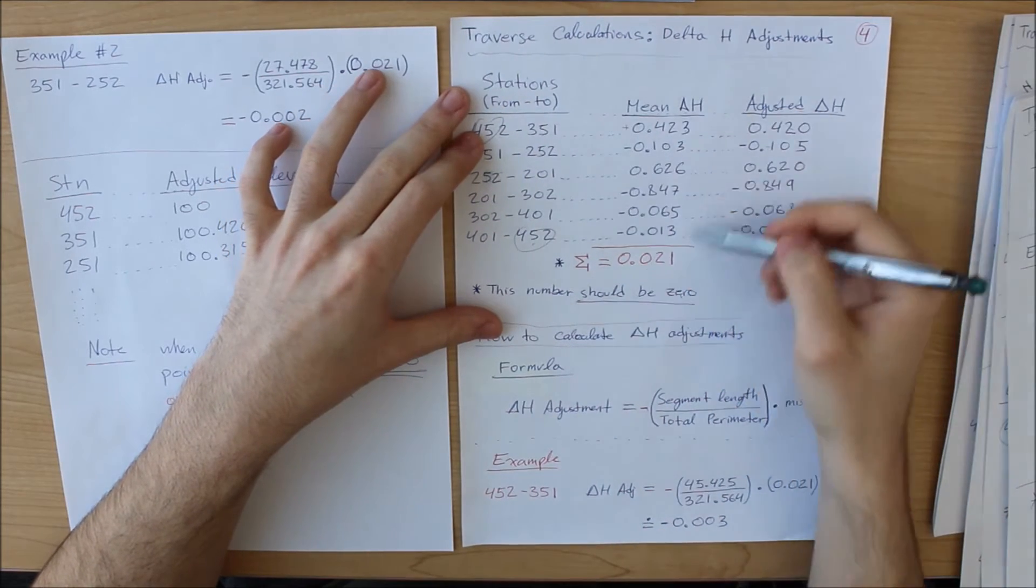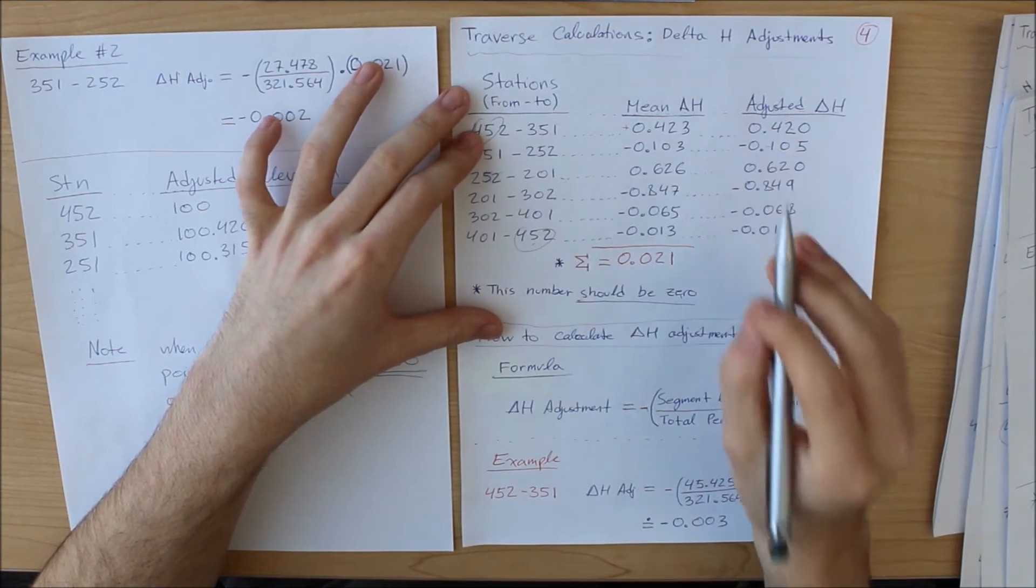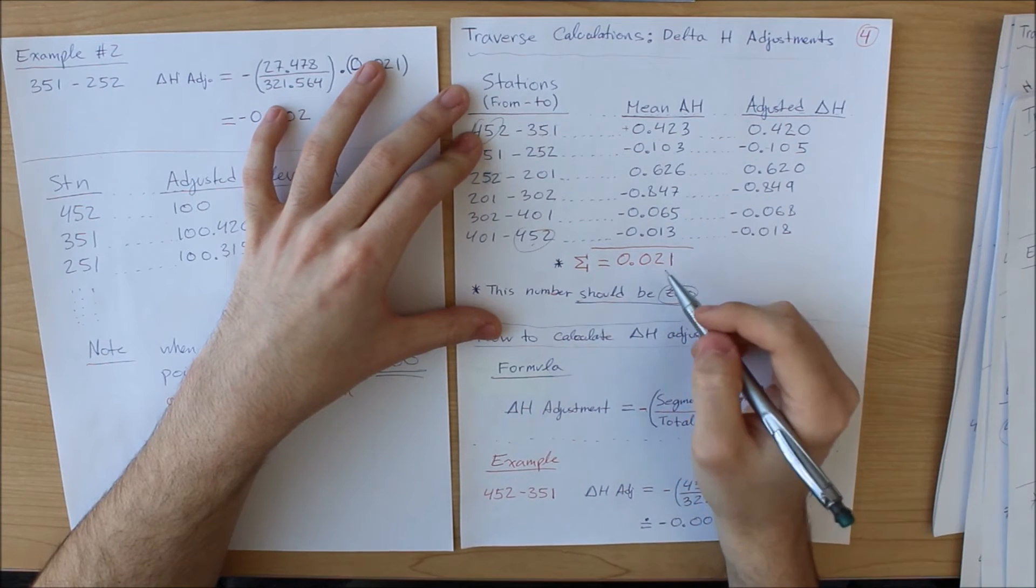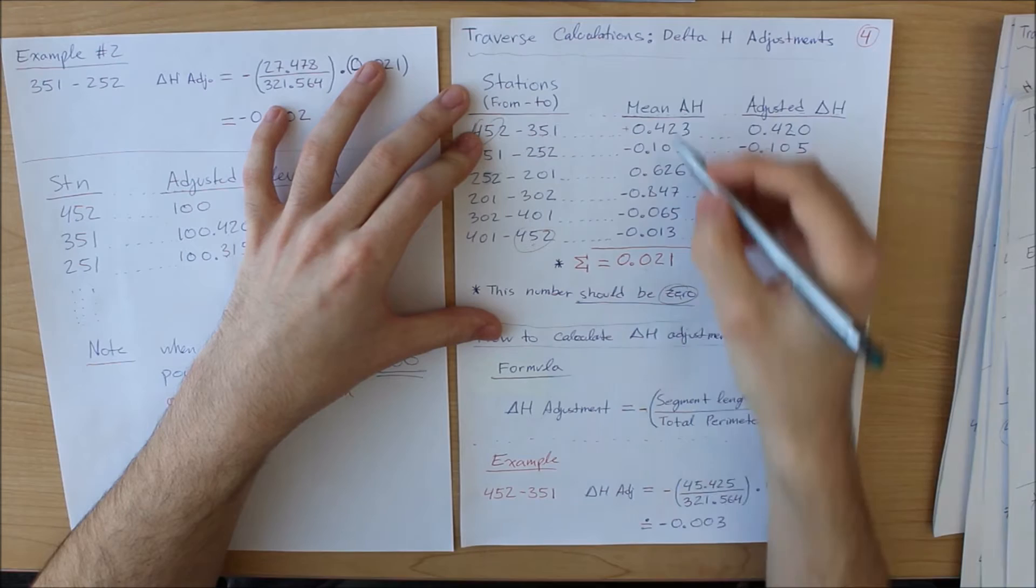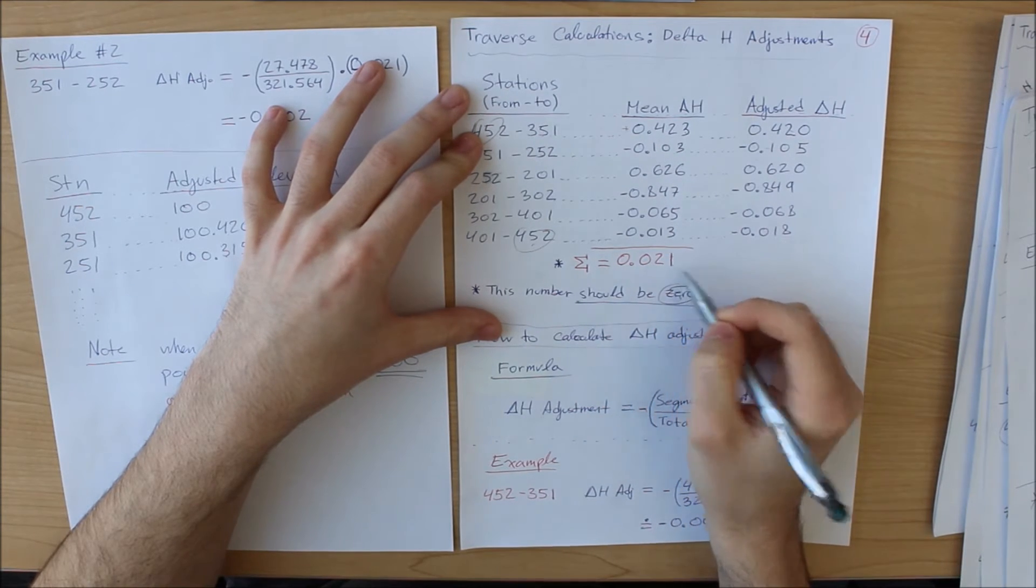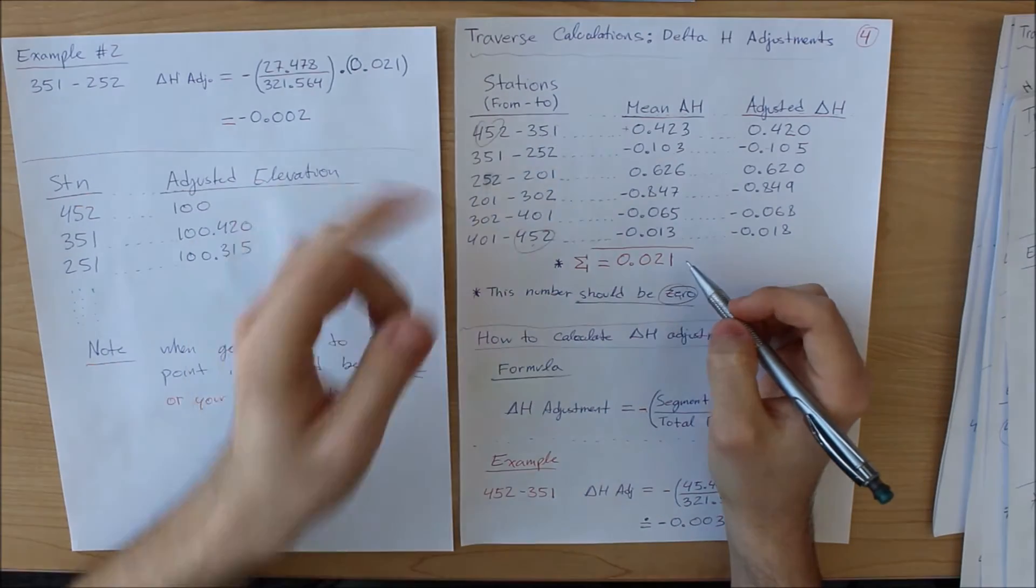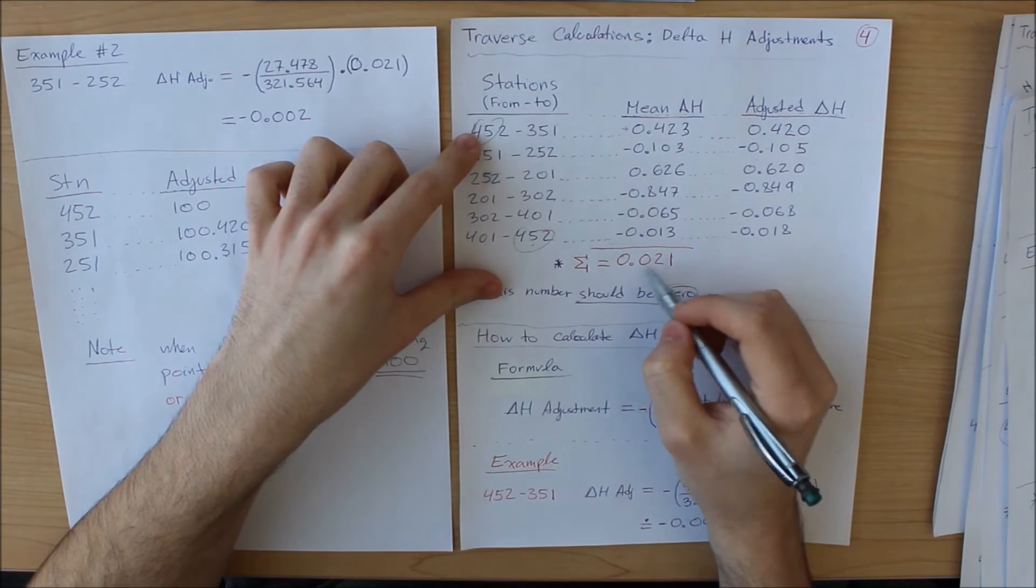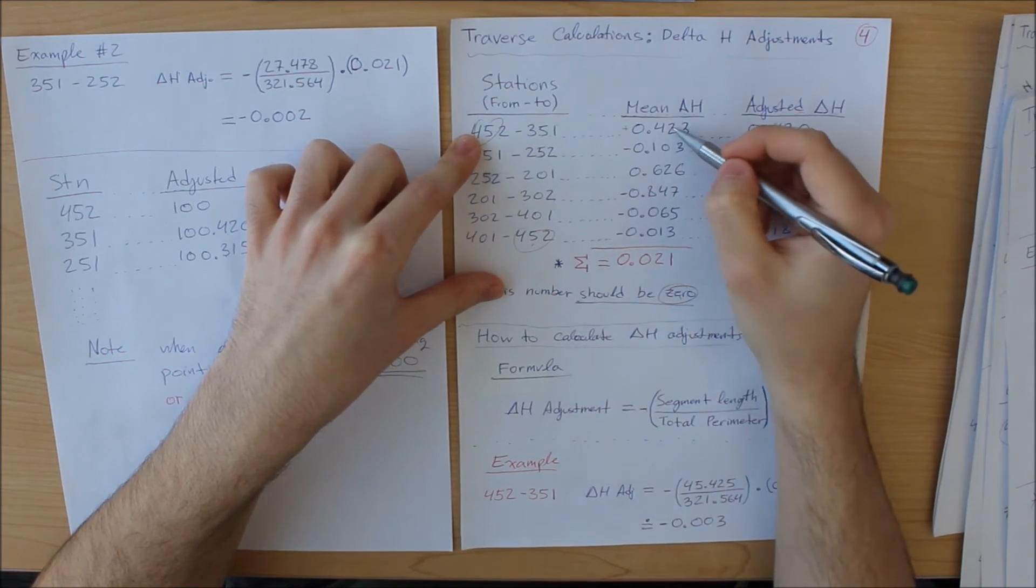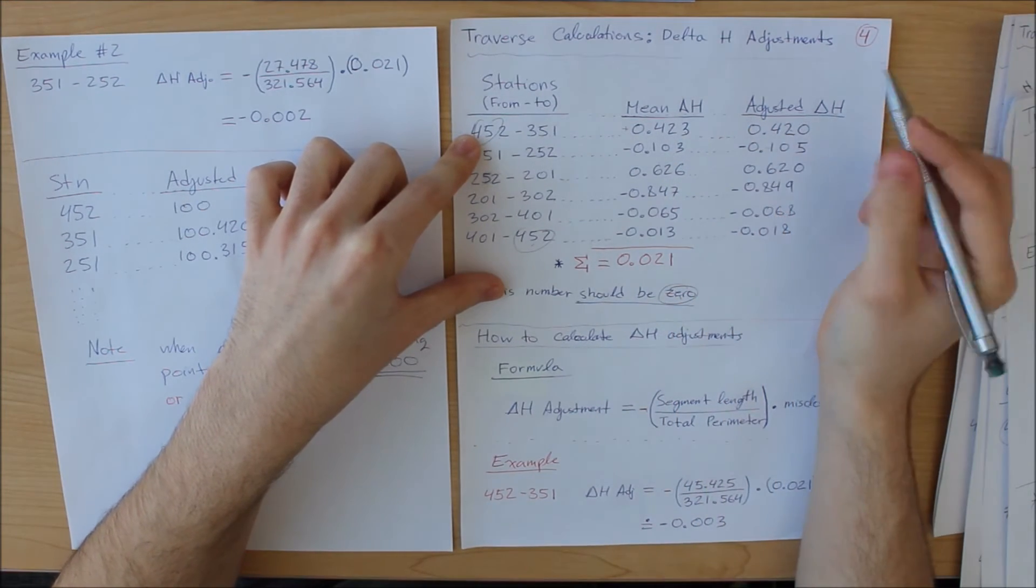Now once you add all these values together, theoretically you should get zero, but you probably won't because it most likely has errors in it. This is the sum that I have right here, 0.021. So that means we are off by 0.021. Now we have to take this and distribute it proportionally to each one.